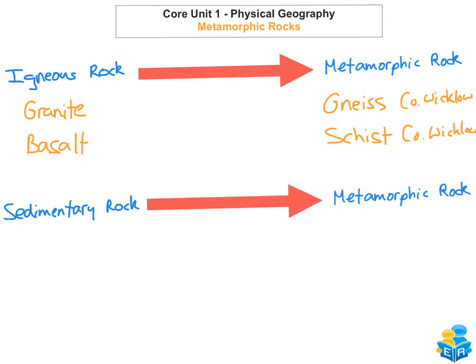The next group we're going to look at is the sedimentary rock group, starting with limestone. Limestone is a sedimentary rock and because of great heat and pressure it can be changed to marble. An example of this would be in County Kilkenny — marble can be found in Kilkenny.